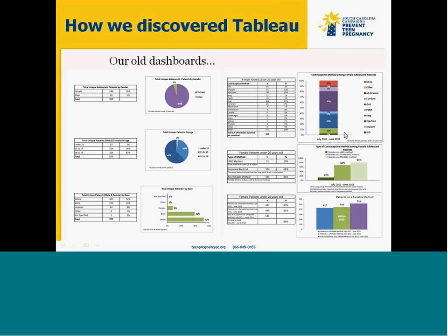We've actually received a grant through the Centers for Disease Control to reduce the incidence of teen pregnancy in two counties in South Carolina. We have a satellite office in the upper part of the state and the lower part of the state, and we receive funding to work in Horry and Spartanburg counties. So we partner with clinics in these counties to work at increasing the availability of services to youth, particularly sexually active youth.